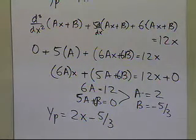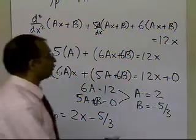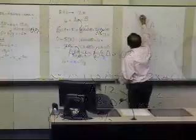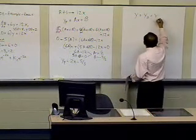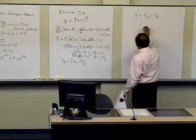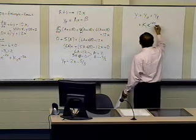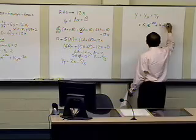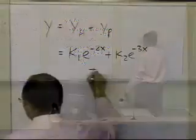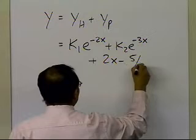Now I have to add the homogeneous part to the particular part to get the complete solution. So y equals yh plus yp: the homogeneous part is k1 e to the power minus 2x, plus k2 e to the power minus 3x, plus the particular part 2x minus 5 thirds.